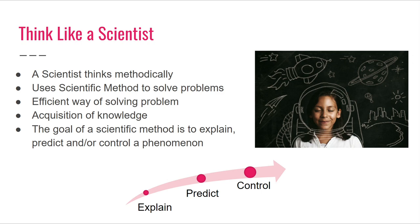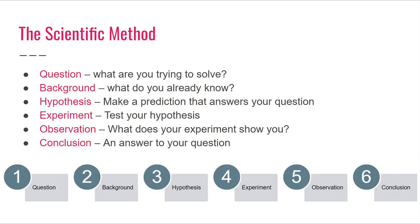Thinking like a scientist is a very unique way of thinking. A scientist thinks methodically and uses the scientific method to solve problems. The scientific method is an efficient way of problem-solving, and through it you can acquire new knowledge and solve problems. The goal of the scientific method is to explain, predict, and/or control a phenomenon.